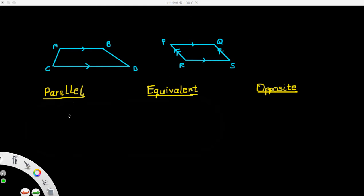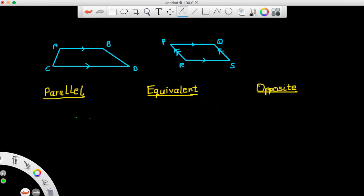Parallel vectors have the same or opposite direction but not necessarily the same magnitude. So if you consider the diagram on your left, vector AB is parallel to vector CD.